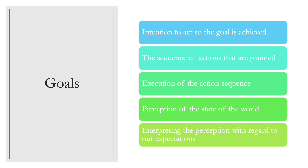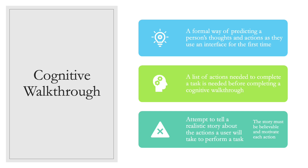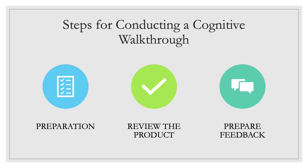A cognitive walkthrough is a formal way of predicting a person's thoughts and actions as they use an interface for the first time. To do this, a list of actions needed to complete a task is necessary before completing a cognitive walkthrough. You want to attempt to tell a realistic story about the actions a user will take to perform a task, and the story needs to be believable and motivate each action. There are three steps for conducting a cognitive walkthrough: first, preparation; second, reviewing the product; and third, preparing feedback.